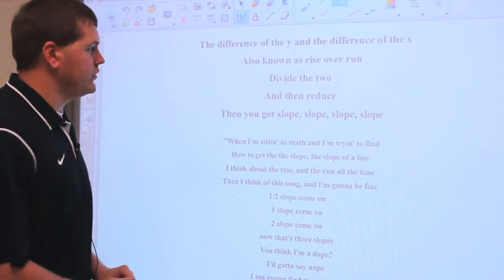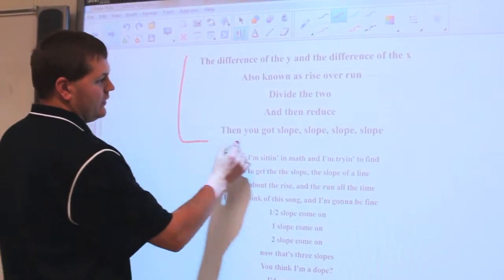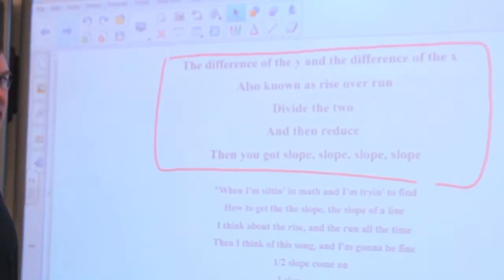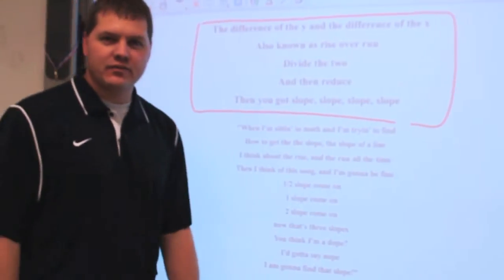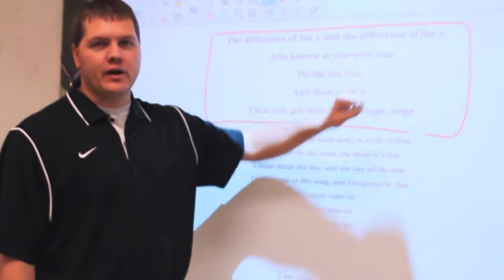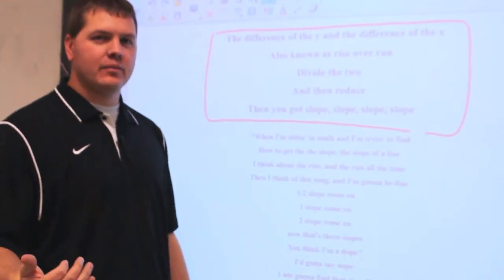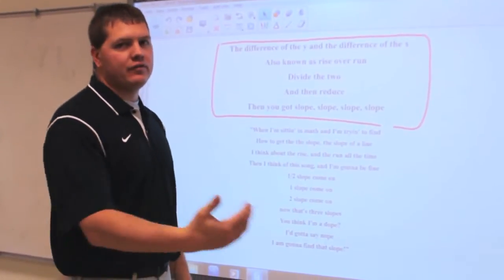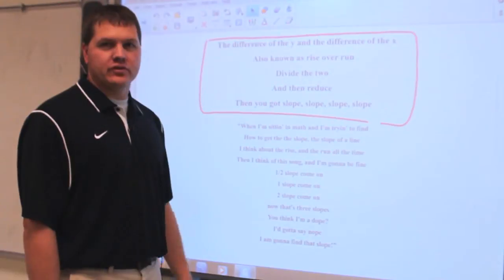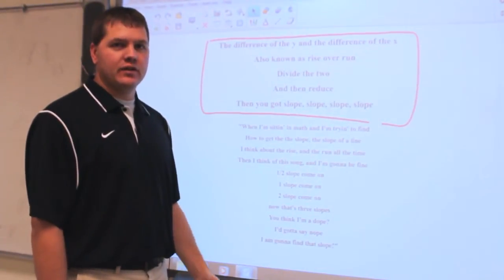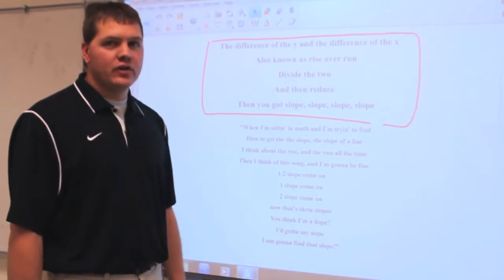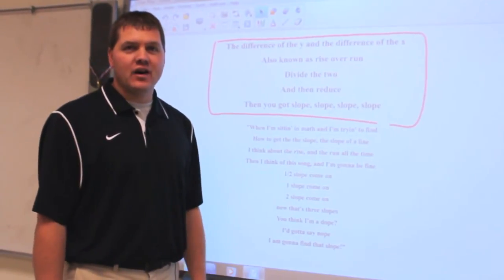The main part of the song that students seem to know is the beginning: the difference of the Y and the difference of the X, also known as rise over run — how high something comes up compared to how far it runs. All of my algebra students now know this song, and even algebra students from last year, if you ask them what the slope of a line is, the majority of them will break into that song and start singing.